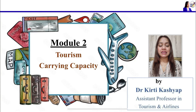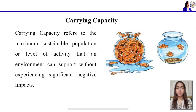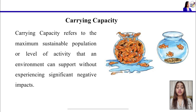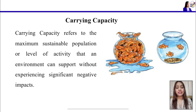Hello everyone, this is Dr. Kitty, assistant professor in tourism and airlines. Today's topic is tourism carrying capacity. Before starting, let us understand what carrying capacity is with this image. You can clearly see a pot of water in which too many fishes were put inside, which not only harmed the fishes but caused water to splash out. Whereas if we put only two to three fishes in that pot, it is feasible for the pot and the fishes to survive and enjoy their life.